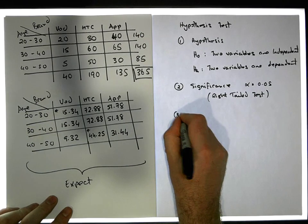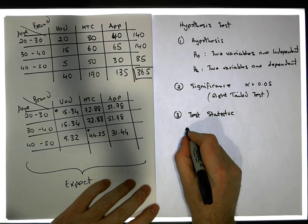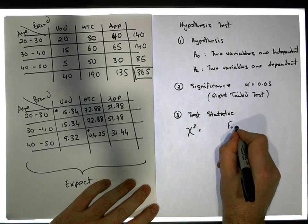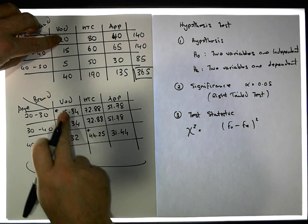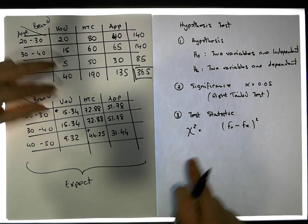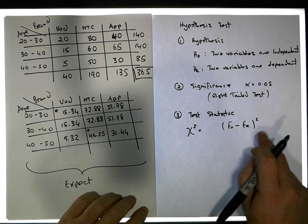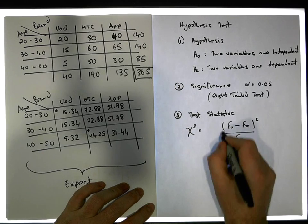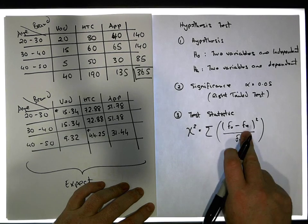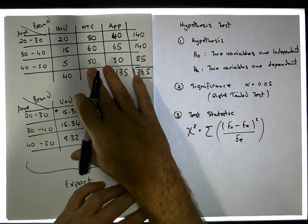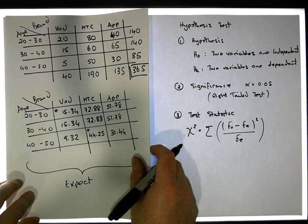Step three: the test statistic. Chi-squared is equal to the observed frequencies minus the expected frequencies, squared — in other words it's the squared distance between our observations. More importantly, it's the squared difference between each observed and expected value, relative to what we'd expect to happen, and it's the sum of those relative squared distances across every single cell in our contingency table.